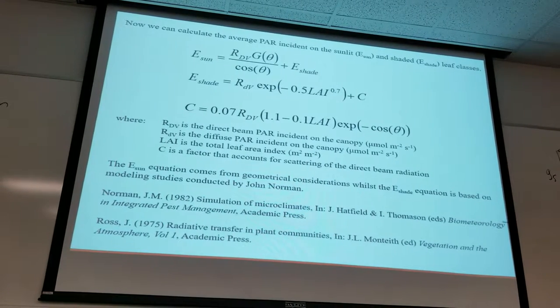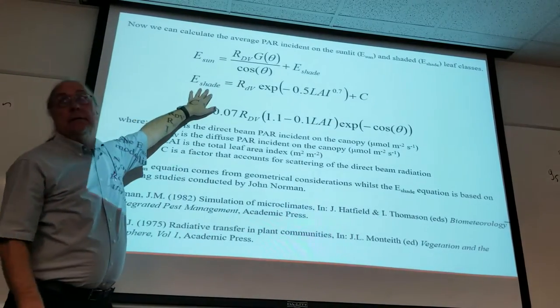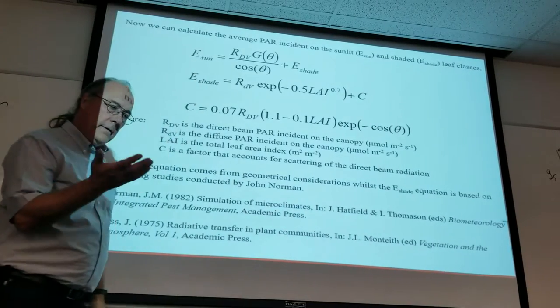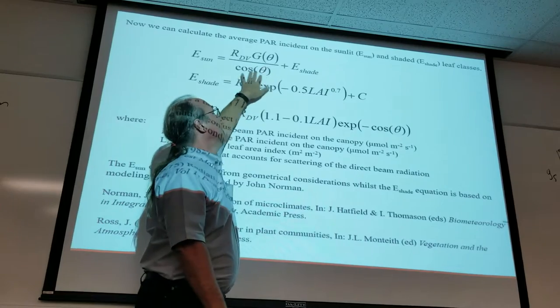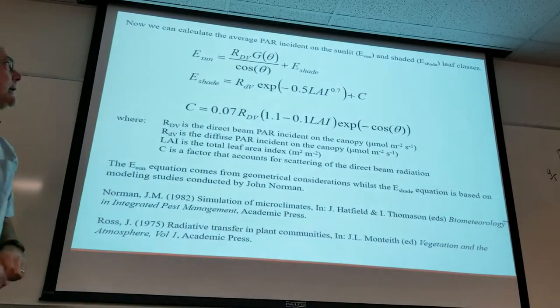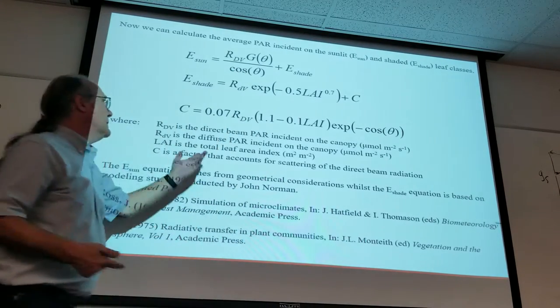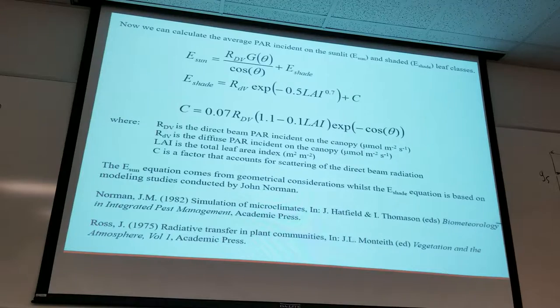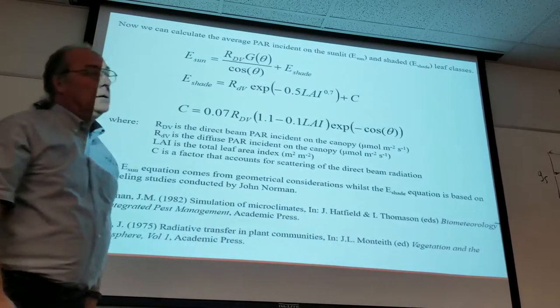Now once we have our leaf area divided, we can estimate the average illumination on the sunlit leaves and the average illumination on the shaded leaves. That's what these two equations are. I_sun, the average sunlit illumination, is R_db times G of theta over cosine theta plus what's in the shade, what's coming from the shade. G of theta is just another extinction coefficient for the canopy that I already explained. R_db is the direct beam radiation that's incident at the top of the canopy. So how much radiation is coming into the top of the canopy from the sun, from the disk of the sun itself, not from the sky, but just from the sun.